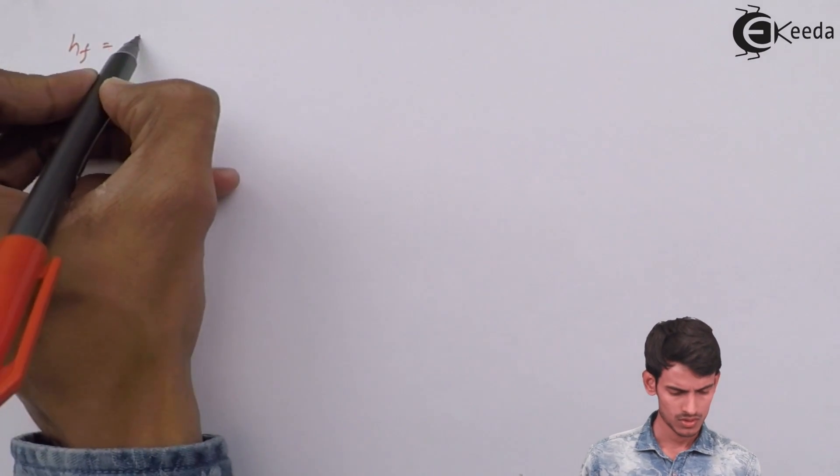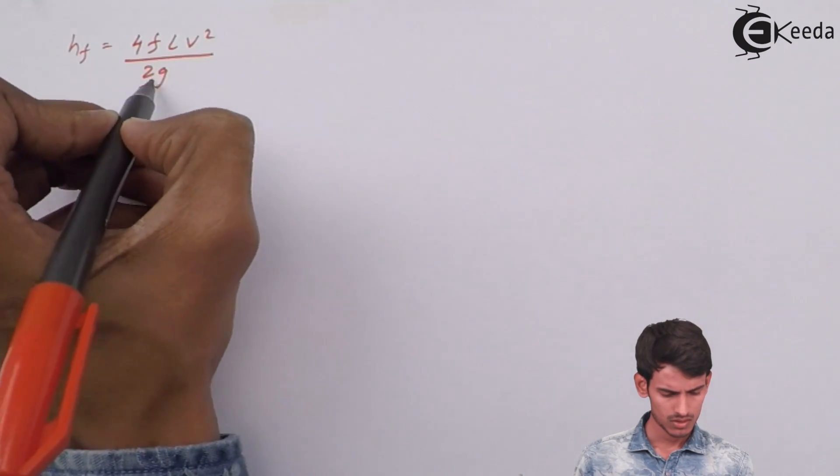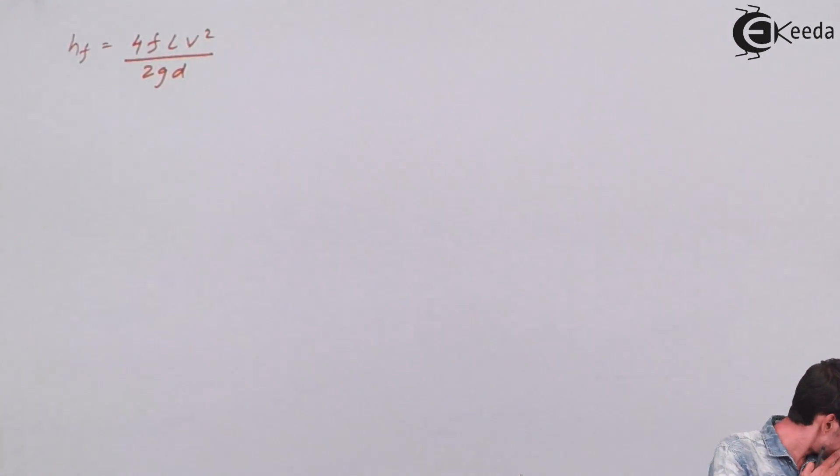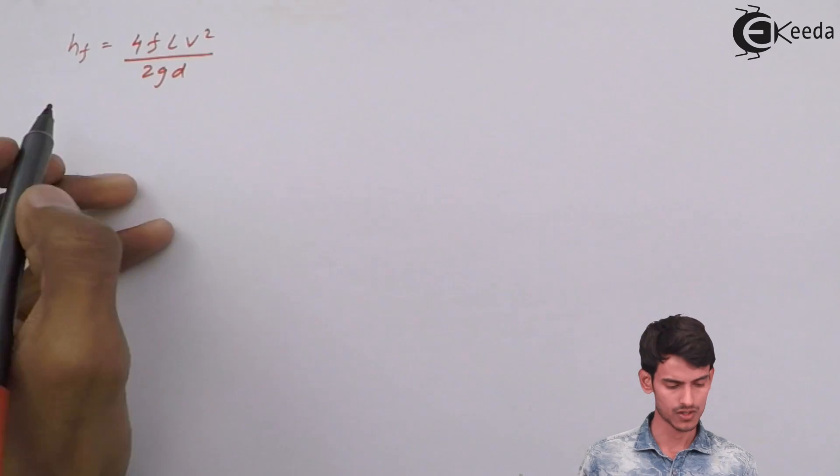Head loss due to friction, hf, is equal to 4FLV²/2gd, which we've already studied in the earlier chapters. The friction factor is given to you. We've got the value of velocity, now using Darcy's equation, let's calculate the head loss due to friction.